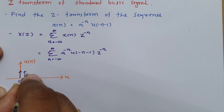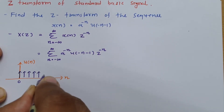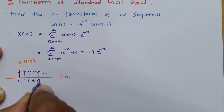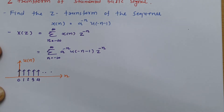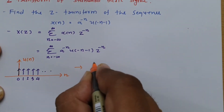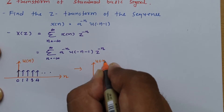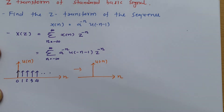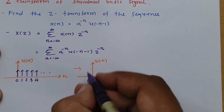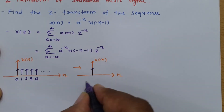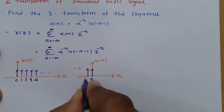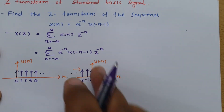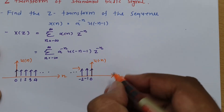The signal u(n) starts from 0 and goes on, with samples at 1, 2, 3, 4, and so on. From this, we can derive u(-n), which is the folded version of u(n). It goes in the opposite direction, with values at -1, -2, and so on.